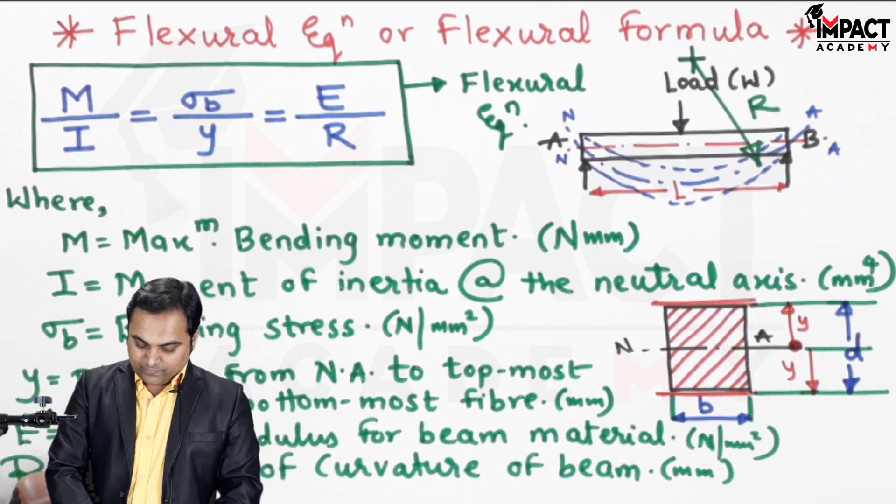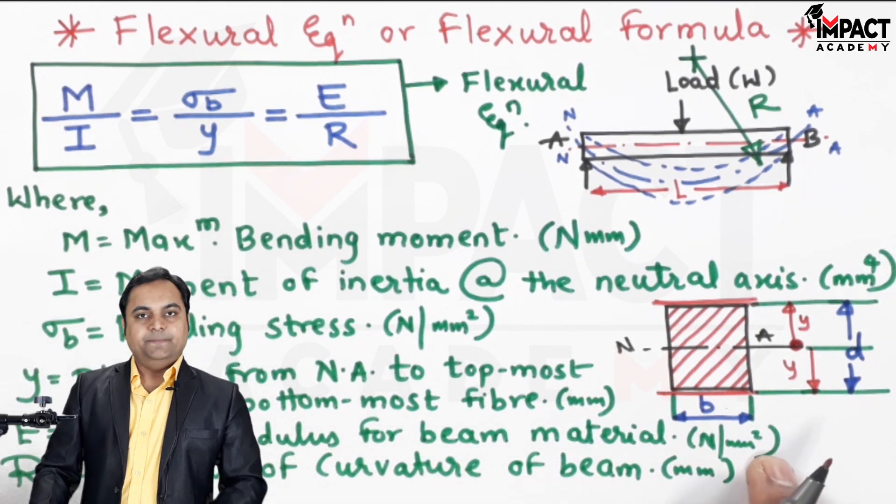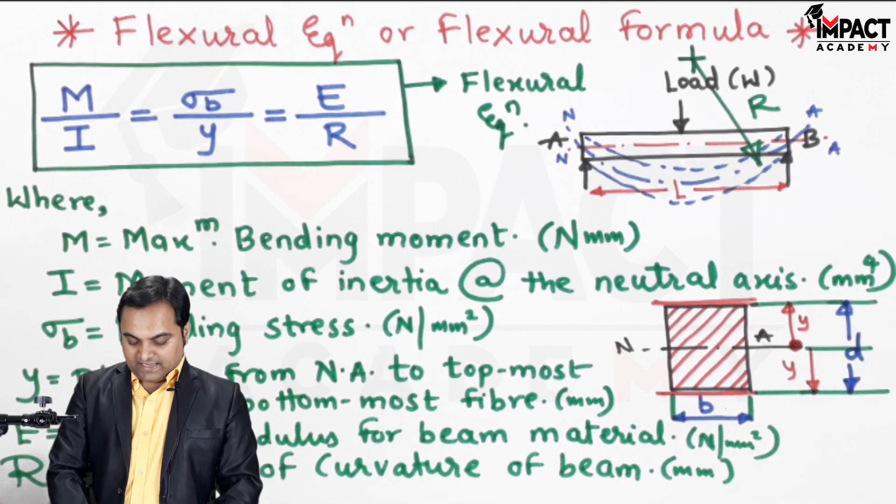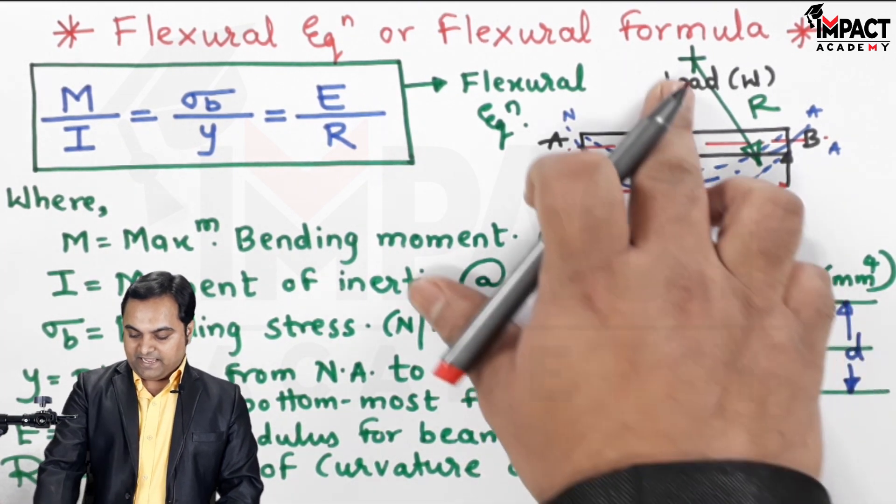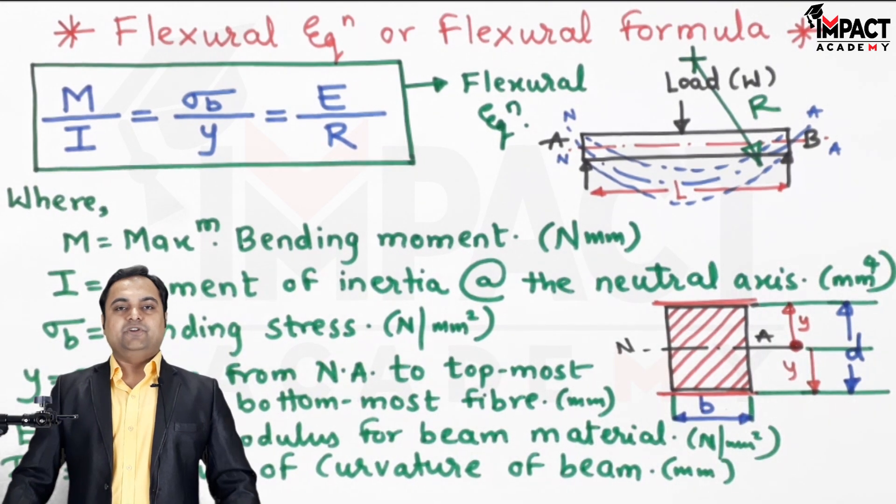E is Young's modulus for the beam material, which depends upon the type of material we are selecting. R is the radius of curvature of the beam. In short, this was the flexural equation.